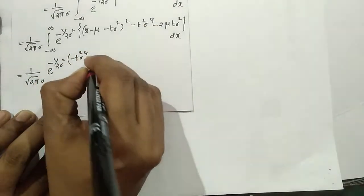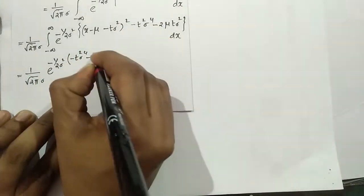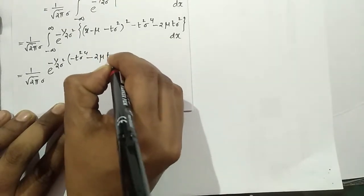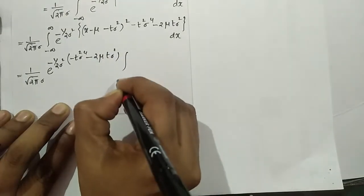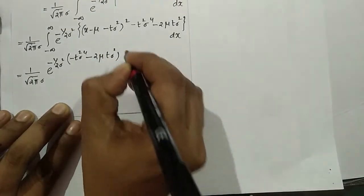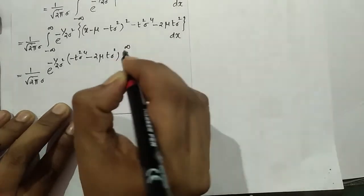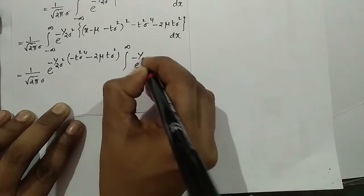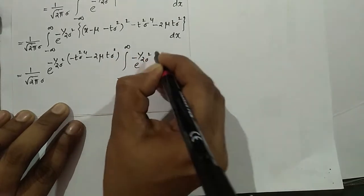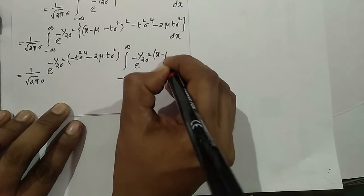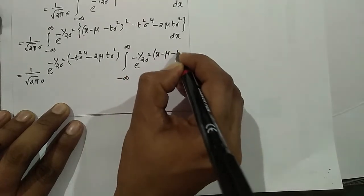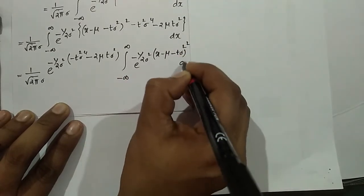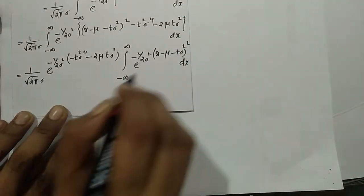After completing the square, we get 1 by 2 mu t sigma squared. The integral becomes e raised to minus 1 by 2 sigma squared times (x minus mu minus t sigma squared) that whole square, times dx.